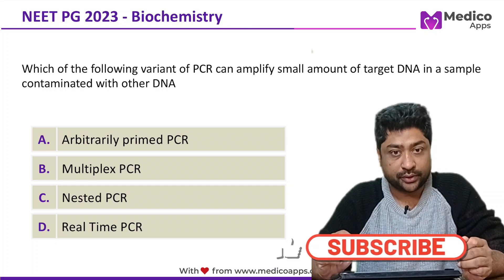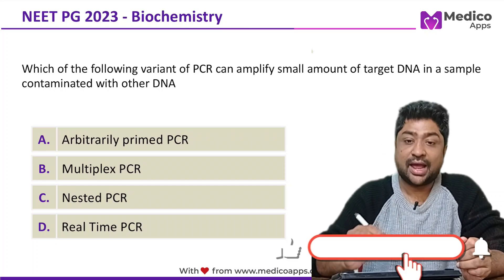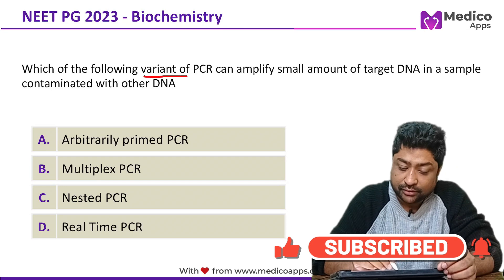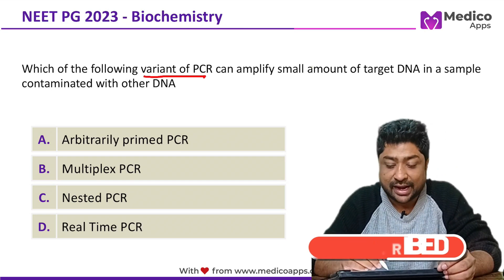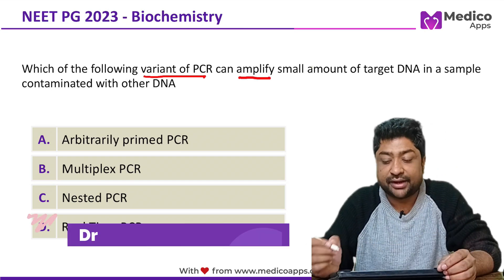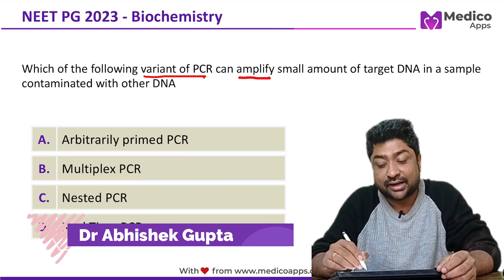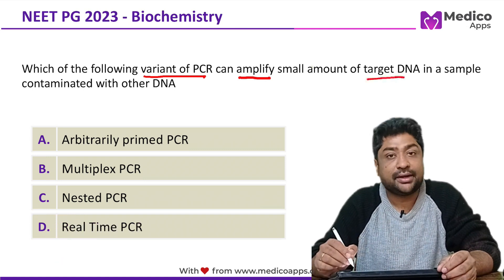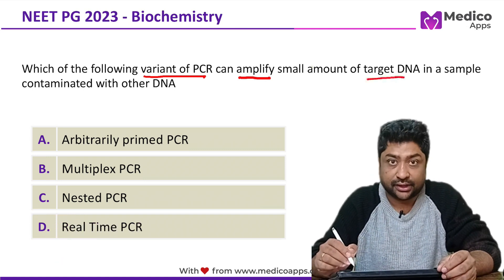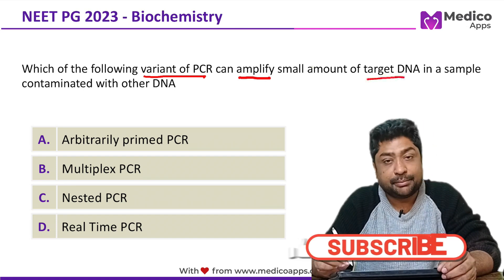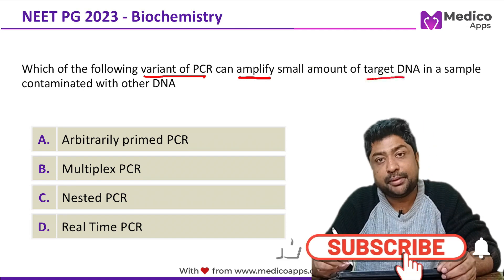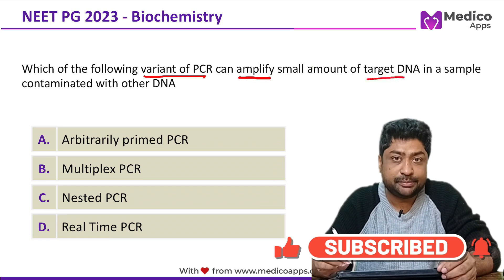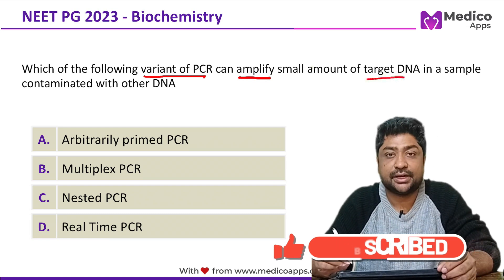This question appeared in NEAT PG 2023. It asks: which of the following variants of PCR can amplify small amounts of target DNA in a sample contaminated with other DNA? The options are arbitrarily primed PCR, multiplex PCR, nested PCR, and real-time PCR.